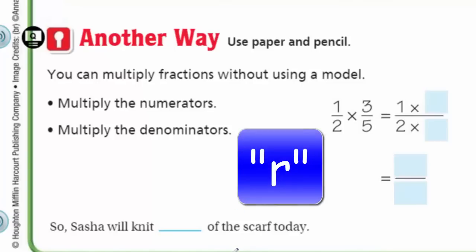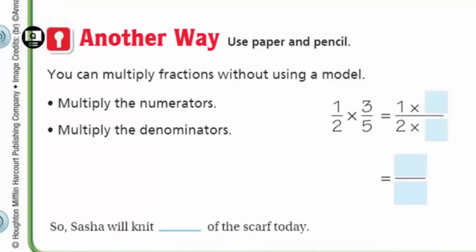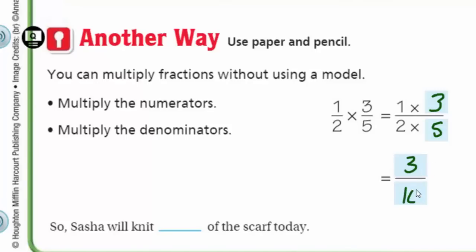So it says you can multiply fractions without using a model. Multiply the numerators — you see 1 times 3. So we have 1 times 3 and 2 times 5. That's what we just did earlier. We're going to multiply the denominators. And that gives us 3 over 10. We have our 3 tenths that we had up there at the top.